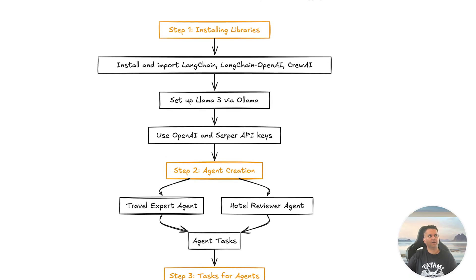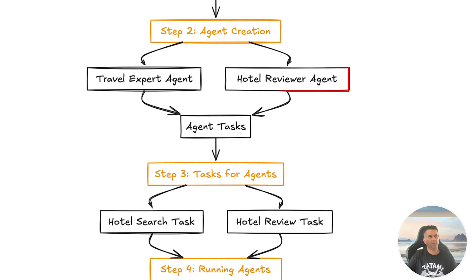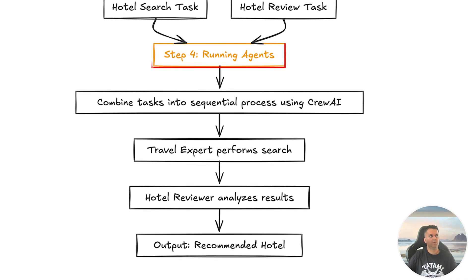As you can see from this diagram, we've already completed step one by setting up our environment and installing the required libraries. In step two we'll create two AI agents: a travel expert and a hotel reviewer — these will be the brains behind our hotel search and review system. In step three we'll assign specific tasks to each agent: the travel expert handles hotel search while the hotel reviewer compares the results. Finally, in step four we'll use CrewAI to run these agents in a sequential process, which will provide us with a recommended hotel.